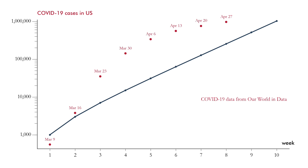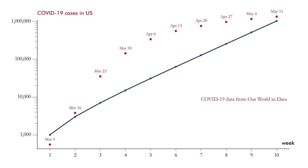I'm not an expert at epidemiology, so I'm not going to give you an interpretation of this data. However, I am an expert at math, and I can definitively tell you that when data appears as a straight line on this type of log plot, it means exponential growth at a constant rate. Looking at the data every day, the last data point is May 11th. The plot shows a best fit line through the last 14 data points, showing that confirmed COVID-19 cases in the United States have grown at a rate of doubling about every month.